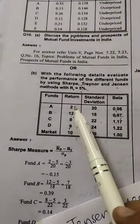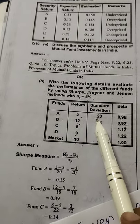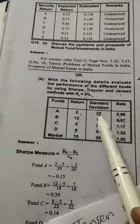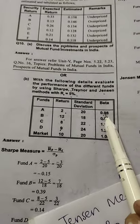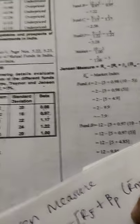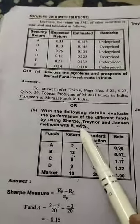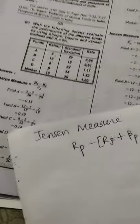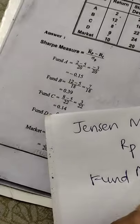For example, if we are taking Fund A, here Rp will be 2 and Rf will be the fixed one which is 5. Plus we have the beta value 0.98, so 0.98 into Rm minus Rf. Market value is 10, so 10 minus Rf is fixed 5. So let's proceed with Fund A.